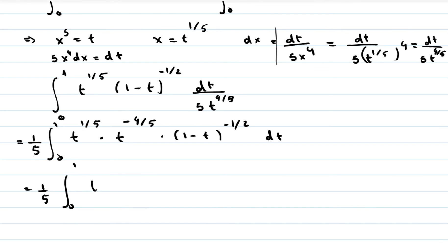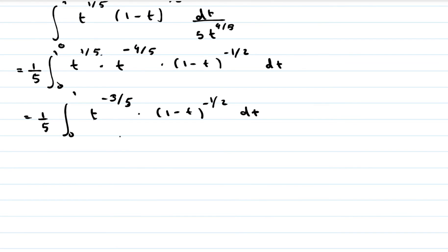We now combine the powers of t. We have t raised to 1 over 5 multiplied by t raised to minus 4 over 5 — same base, so we subtract: 1 over 5 minus 4 over 5 equals minus 3 over 5. So the integrand becomes t raised to minus 3 over 5 times 1 minus t raised to minus 1 over 2, dt. This now conforms to the standard beta form since t appears without an additional outer power.